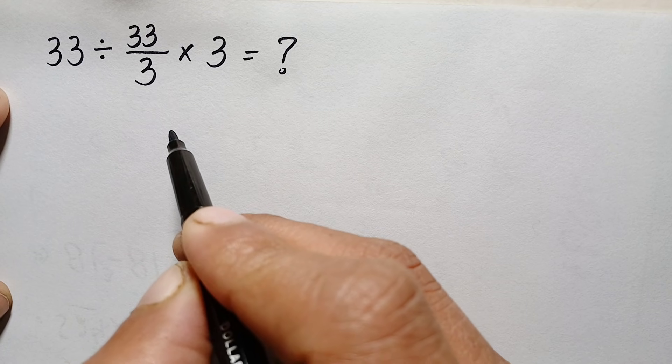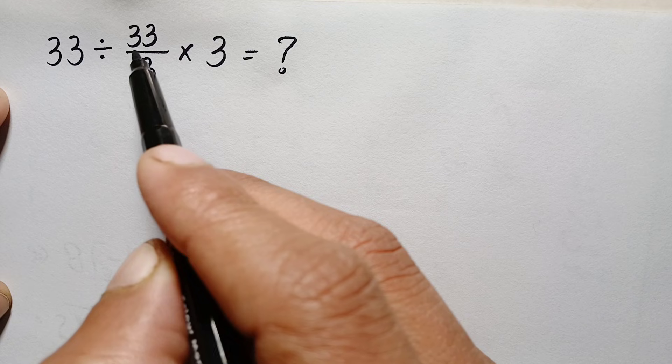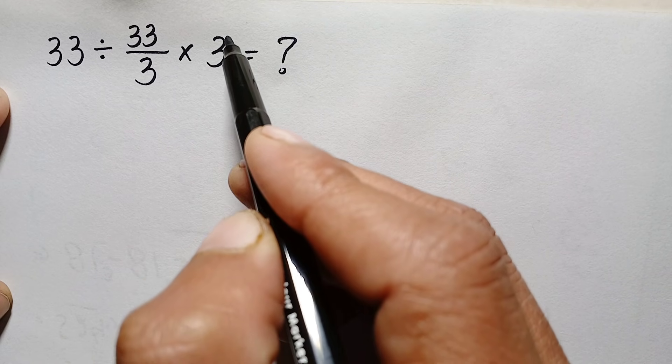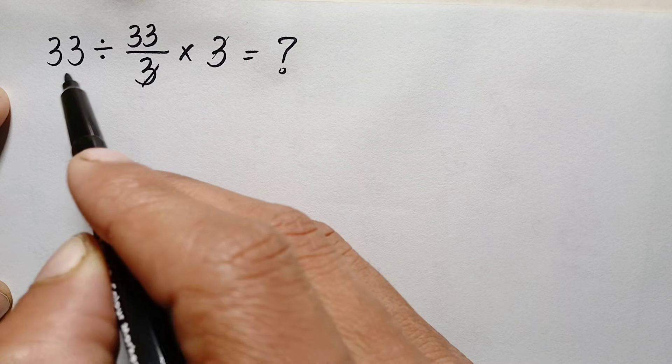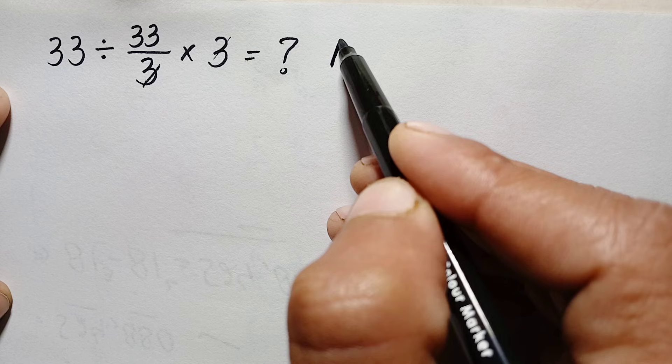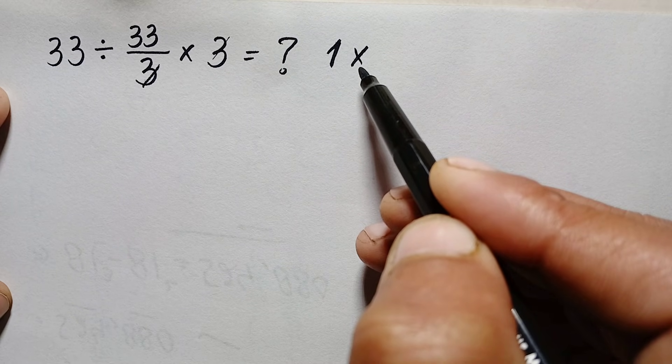Hello everyone, you are welcome. What is the correct answer of 33 divided by 33/3 times 3? If we cancel this 3 with 3, this part of the number will become 33, and dividing 33 by 33 gives simply 1. You might think one is the correct answer, but one is not the correct answer.